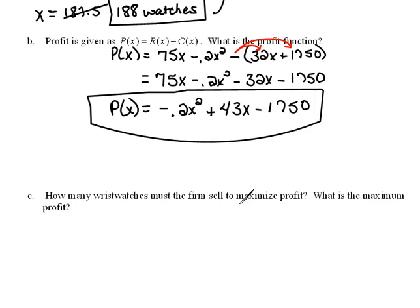Now in the next part, they say how many wristwatches must the firm sell to maximize profit? And then what is that maximum profit? So here they're asking us basically to find the vertex. Remember when we're talking about quadratics, the maximum is the vertex. They're basically just asking us to find the vertex for this profit function.